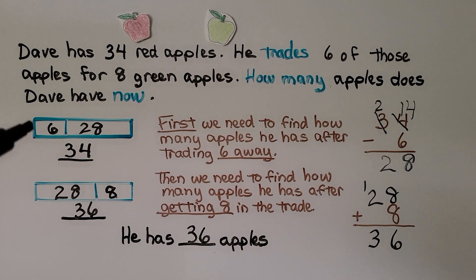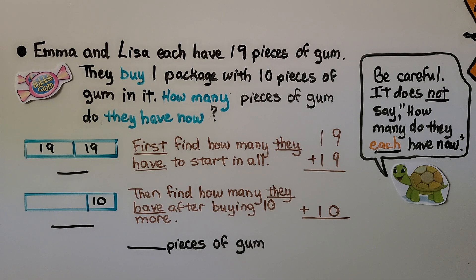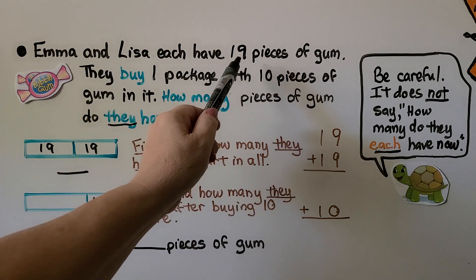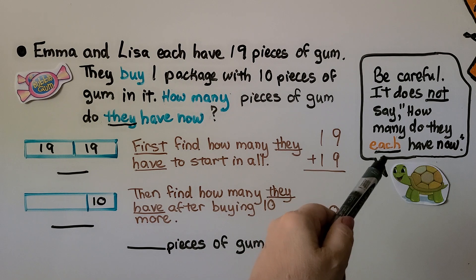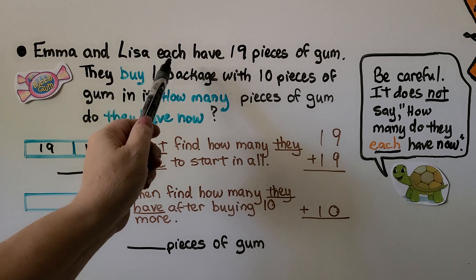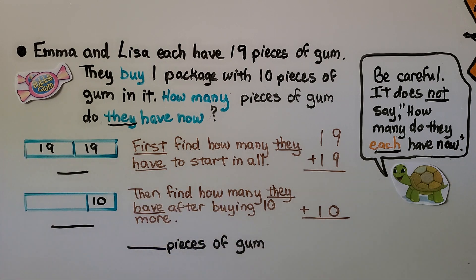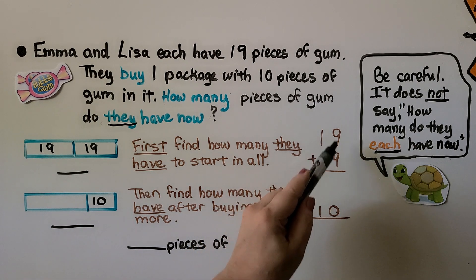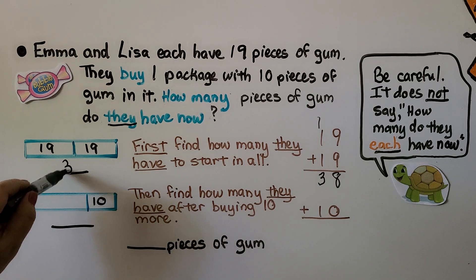To solve that problem, first we needed to subtract, then we needed to add to get the answer. This problem says Emma and Lisa each have 19 pieces of gum. They buy one package with 10 pieces of gum in it — how many pieces of gum do they have now? Be careful: it says they each have 19 pieces, but it's asking how many do they have together. So first we find out how many they have to start in all: Emma has 19, Lisa has 19, so we add 19 plus 19. 9 plus 9 is 18; we regroup the 10, put the 8 down, and add the tens — we have three 10s. To start, they had 38 pieces of gum.